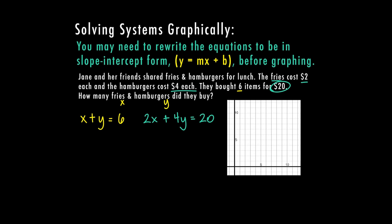You can see that neither equation is in y equals mx plus b form, so I need to isolate the y. Starting with the first equation, x plus y equals 6: I subtract x from both sides, giving me y equals negative x plus 6. I can't combine the 6 and x because they don't have like terms, so I write negative x first, then plus 6, and now it's in slope-intercept form.